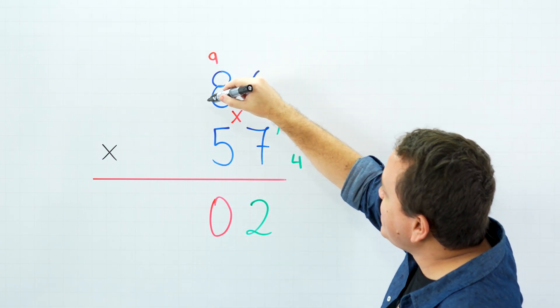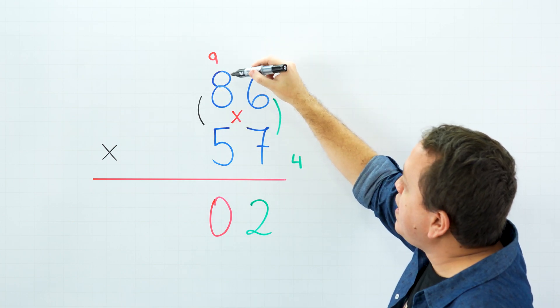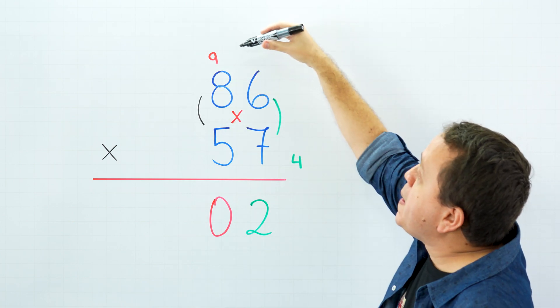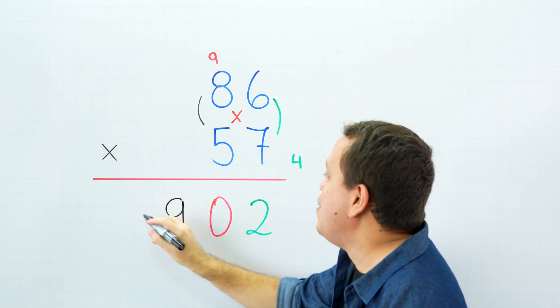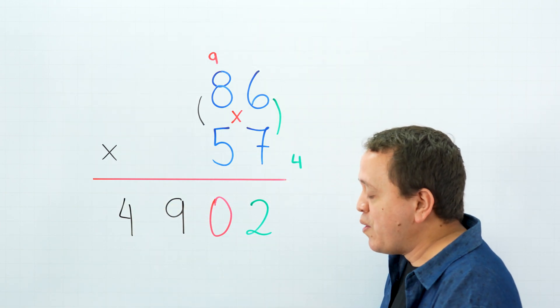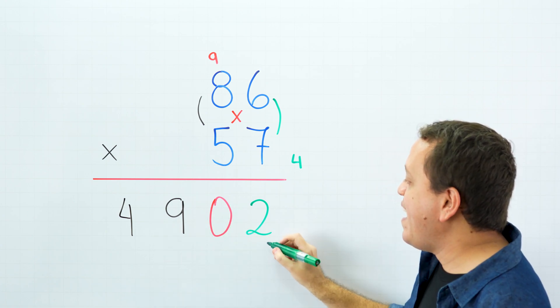Finally, we are going to multiply the digits on the left side. 8 times 5 is 40, plus 9 that we carry over is 49. 49, that's right. Our final answer is 4902.